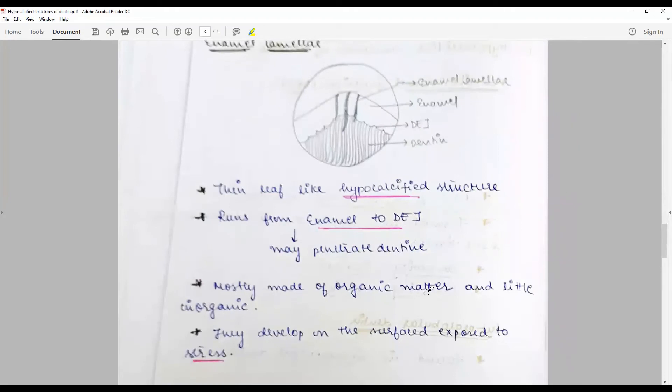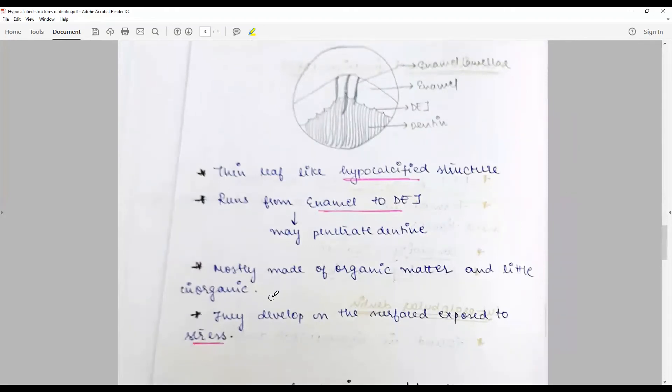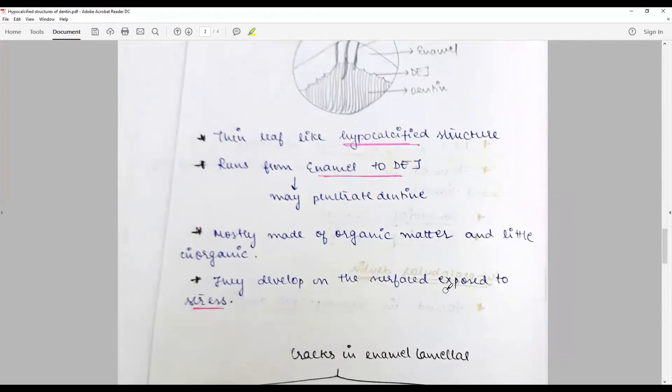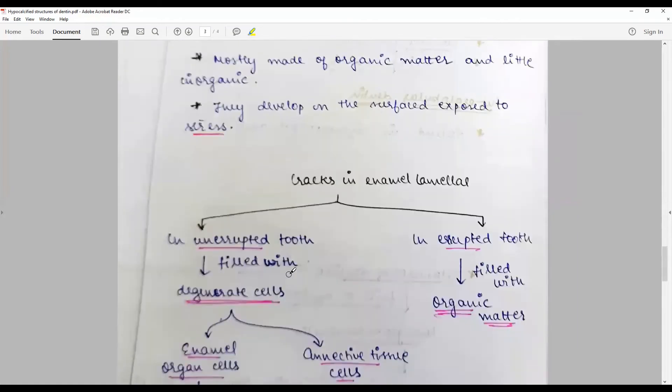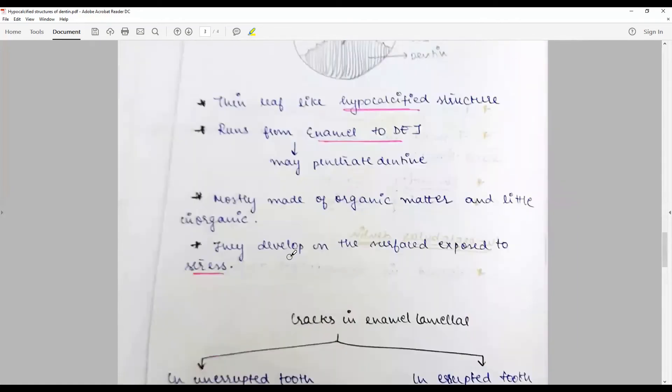They are mostly made up of organic matter and little inorganic component. They usually develop in surface areas where there is high amount of stress. Notably there is type C which is completely organic in nature.